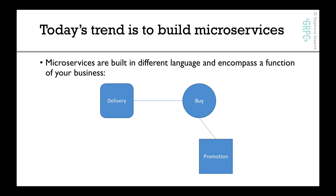Maybe there's also a delivery service microservice connected to your buy service, because after a user buys something it needs to be delivered. And maybe you have a user microservice connected to the delivery, the buy, and the promotion microservice. So all in all, you get a bunch of microservices in a bunch of different languages and they have to talk to one another.